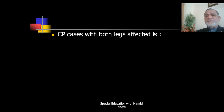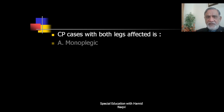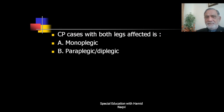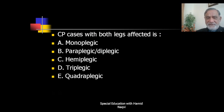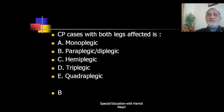Next question: CP cases with both legs affected is known as monoplegic, paraplegic or diplegic, hemiplegic, triplegic, or quadruplegic? The correct answer is B — CP with both legs affected is paraplegic or diplegic.